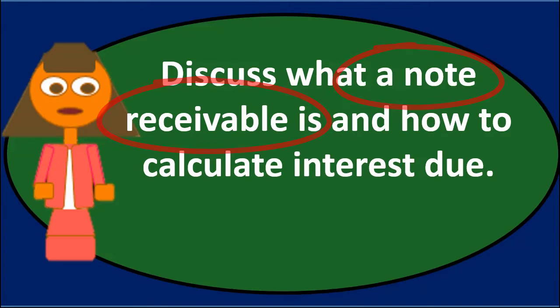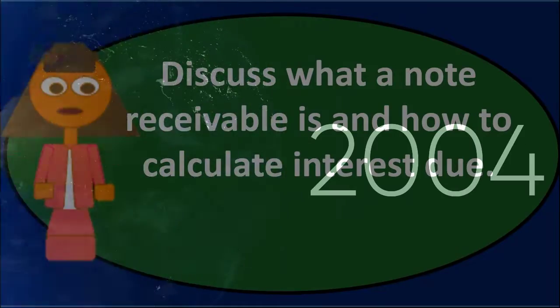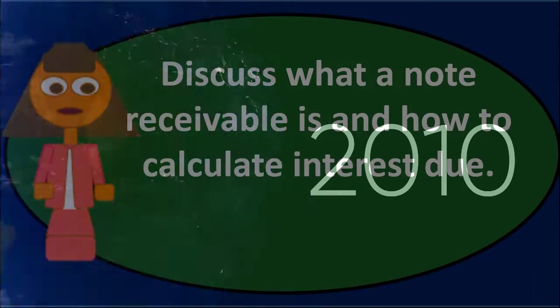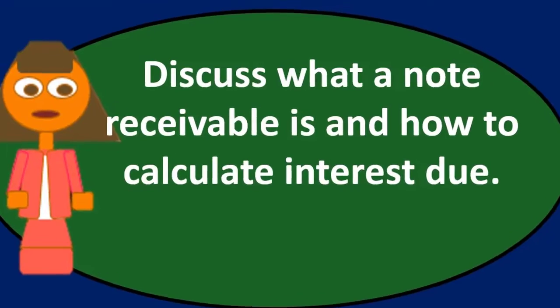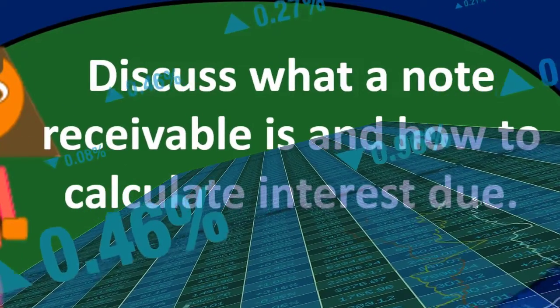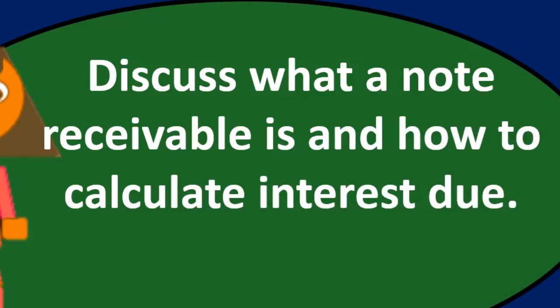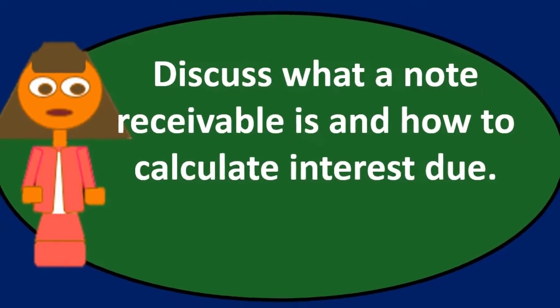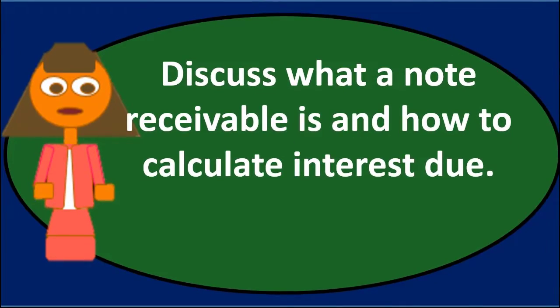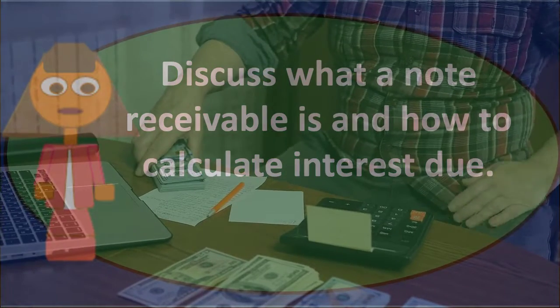The accounts receivable represents what we expect to be paid within a normal, probably around 30-day time period. When would we want a note receivable? If we made a sale of something that is larger in nature, meaning the dollar amount is larger, and or we have a longer time period in which we expect to receive payment. Because of those things, we possibly also want to collect interest on it.